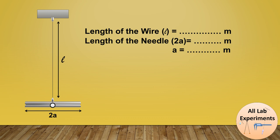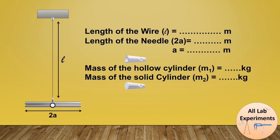We also require the mass of hollow and solid cylinders. The mass of the hollow cylinder we consider as m₁ and solid cylinder as m₂. Write them in kilograms.